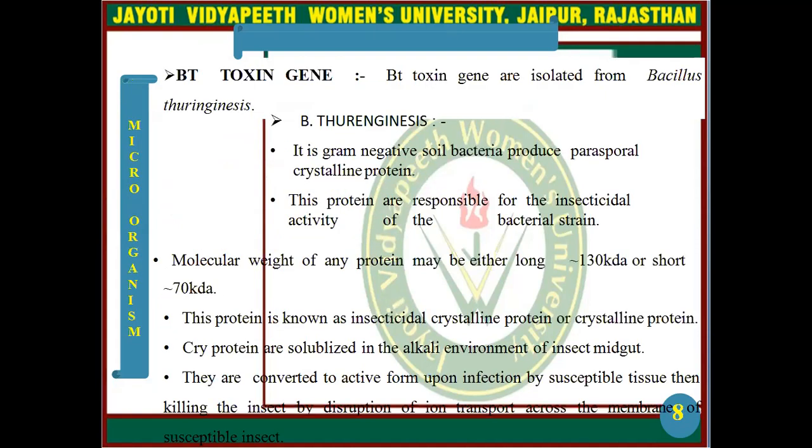The BT toxin gene is isolated from Bacillus thuringiensis, a gram-positive soil bacterium that produces parasporal crystalline proteins. These proteins are responsible for the insecticidal activity of the bacterial strain. The molecular weight of these proteins may be either approximately 130 kilodaltons or 70 kilodaltons.